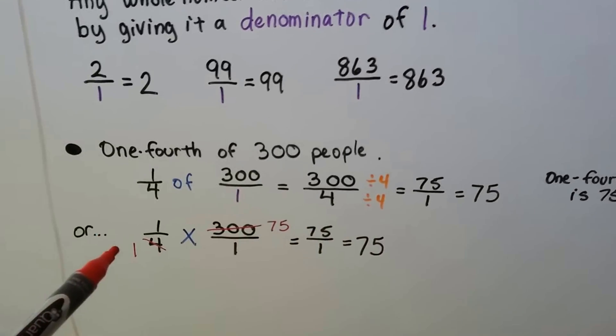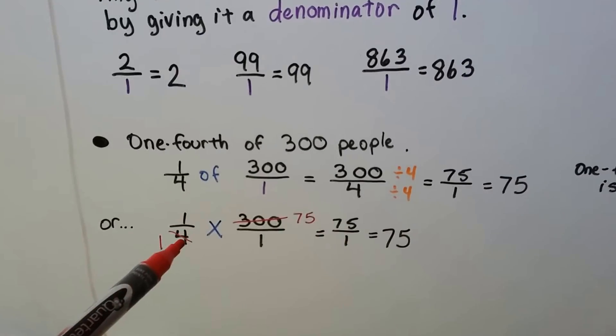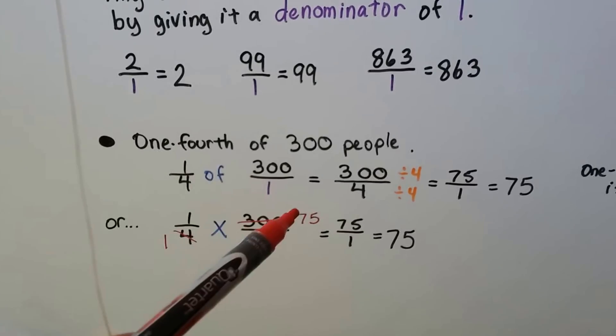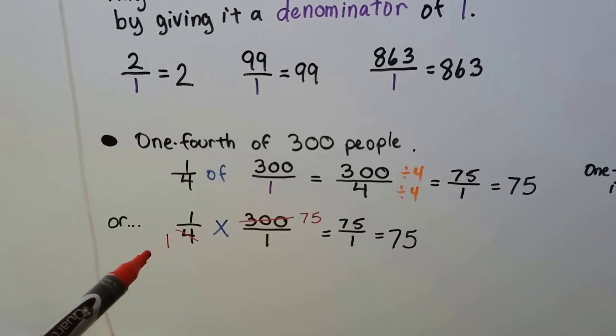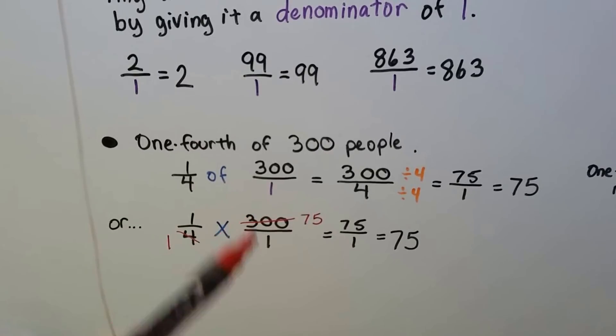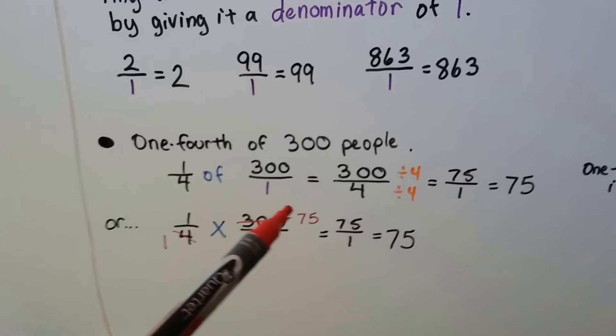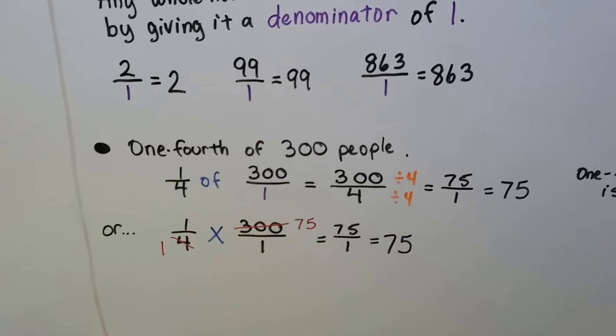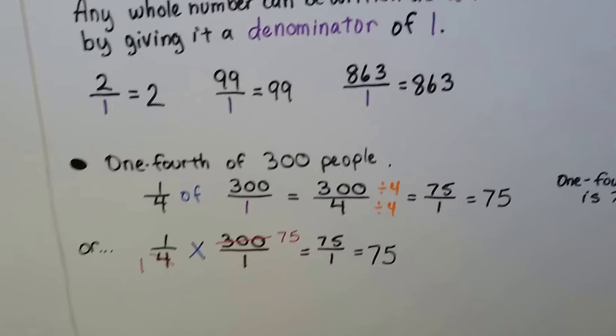We also could have done it this way. We could have said 300 divided by 4 is 75. So we cross this out and make it a 75 and we cross this out as a 1. There's 1 four in 4. There's 75 fours in 300. And now if we multiply straight across we get 75 over 1 which is 75.